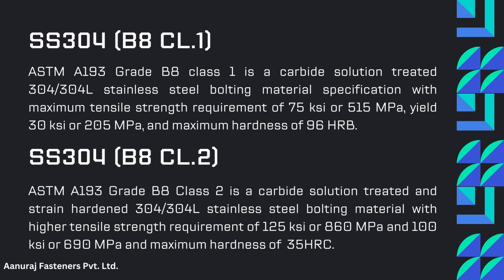Of 96 HRB. SS304 B8 Class 2 — ASTM A193 Grade B8 Class 2 is a carbide solution treated and strain hardened 304/304L stainless steel bolting material with a higher tensile strength requirement of 125 KSI or 863 MPa, yield of 100 KSI or 690 MPa, and maximum hardness of 35 HRB.